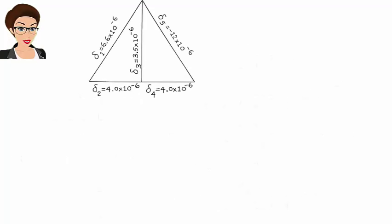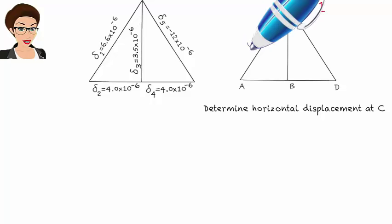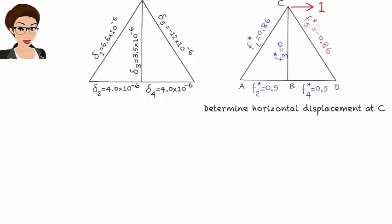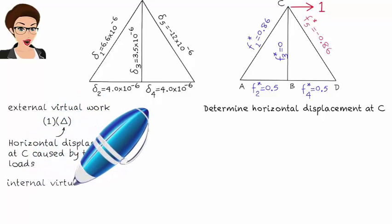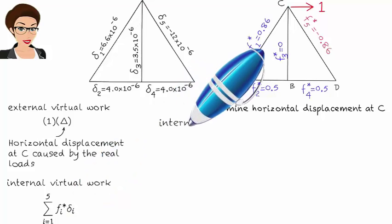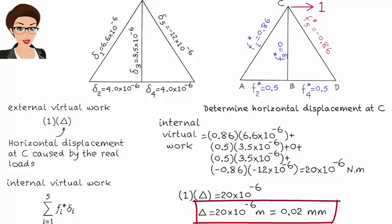Now that we have determined the elongation for each member due to the real loads, we can start calculating the desired displacements using the method of virtual work. To determine horizontal displacement at point c, place a virtual unit load in the direction of the displacement at c and determine the member forces due to this load. The external virtual work is 1 times delta. Setting external virtual work equal to internal virtual work gives: 1 times delta equals 20 times 10 to the negative 6, so horizontal displacement at c equals 0.02 millimeters.